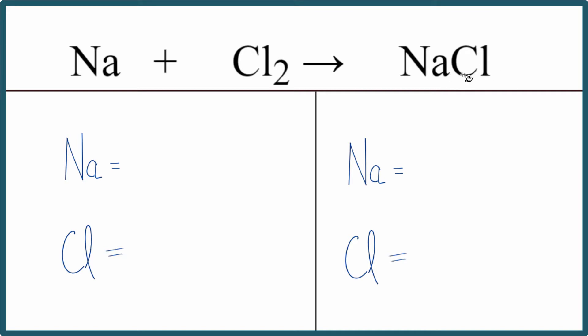The first thing we need to do is to count up the number of atoms. So there's a one after here. We don't write it, but it's assumed to be there. So we have one sodium atom, the subscript here, two chlorine atoms. Then on the product side, one sodium and one chlorine. So we've counted everything up.